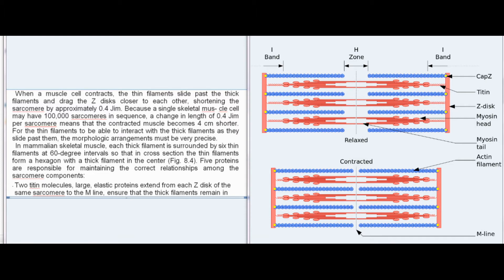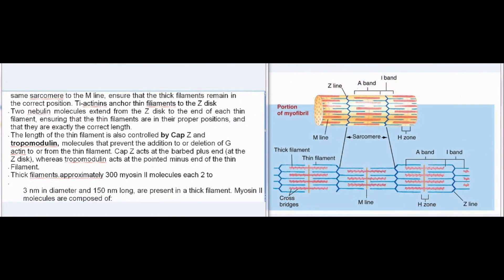When a muscle cell contracts, the thin filaments slide past the thick filaments and drag the Z-discs closer to each other, shortening the sarcomere by approximately 0.4 μm. Because a single skeletal muscle cell may have 100,000 sarcomeres in sequence, a change in length of 0.4 μm per sarcomere means that the contracted muscle becomes 4 cm shorter. In mammalian skeletal muscle, each thick filament is surrounded by 6 thin filaments at 60-degree intervals so that in cross-section the thin filaments form a hexagon with a thick filament in the center.